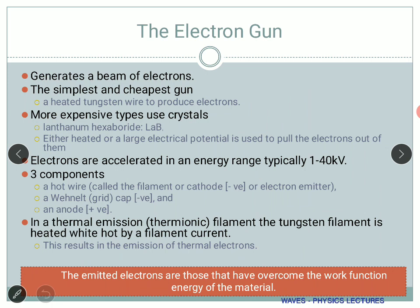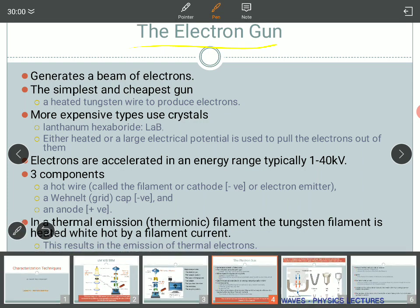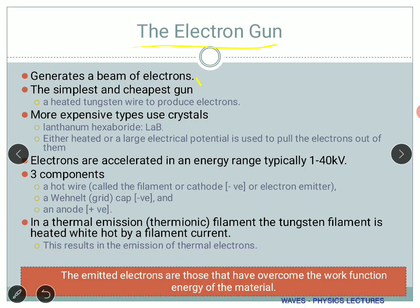The electron gun is one of the most important things you should know theoretically — from an examination point of view as well as for operating the instrument. An electron gun is a simple setup which generates a beam of electrons. You can extract electrons in two ways: either you heat the material, or you apply a field. Depending on that there is a category of scanning electron microscope.